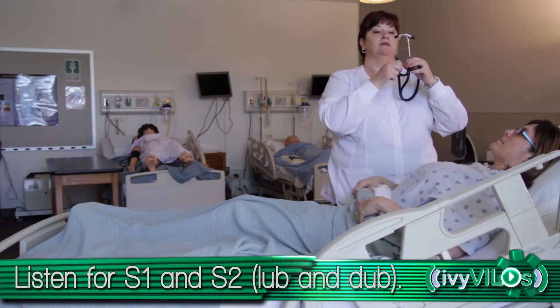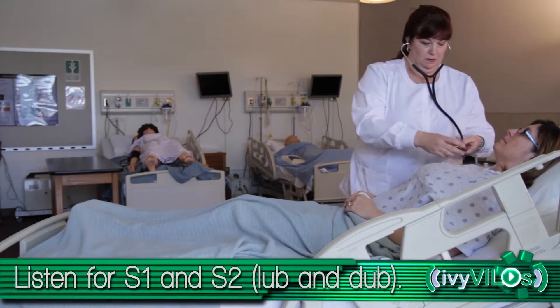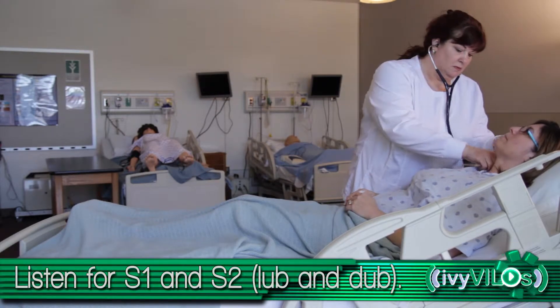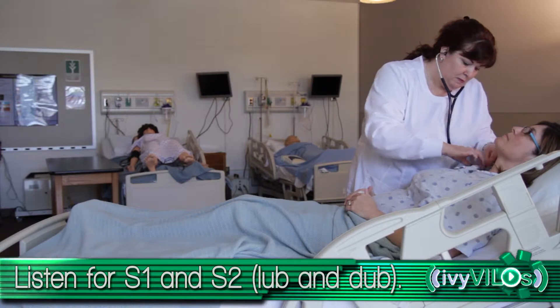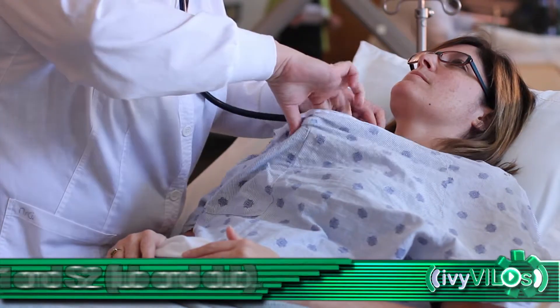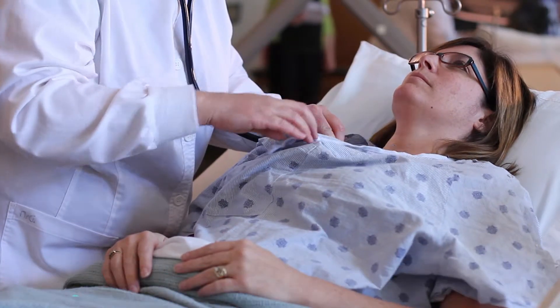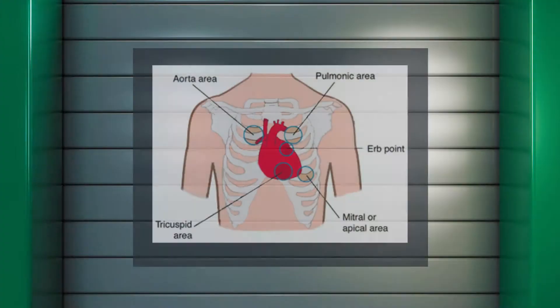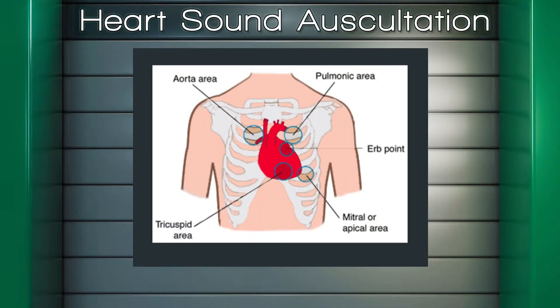Auscultate or listen to the heart sounds, listening for the S1 and S2, or the lub-dub. Listen over the five following locations. Aortic valve at the second intercostal space to the right of the sternal border. Pulmonic valve in between the second intercostal space to the left side of the sternal border.